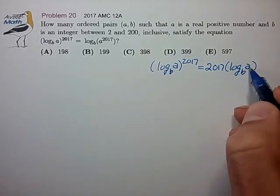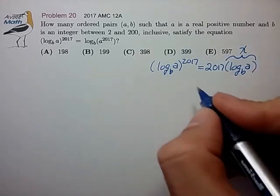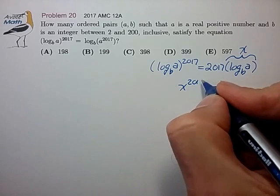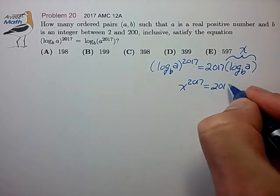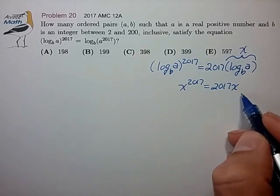We have log to the base b of a on both sides, so let's do a variable substitution here. Let's call this x for now.